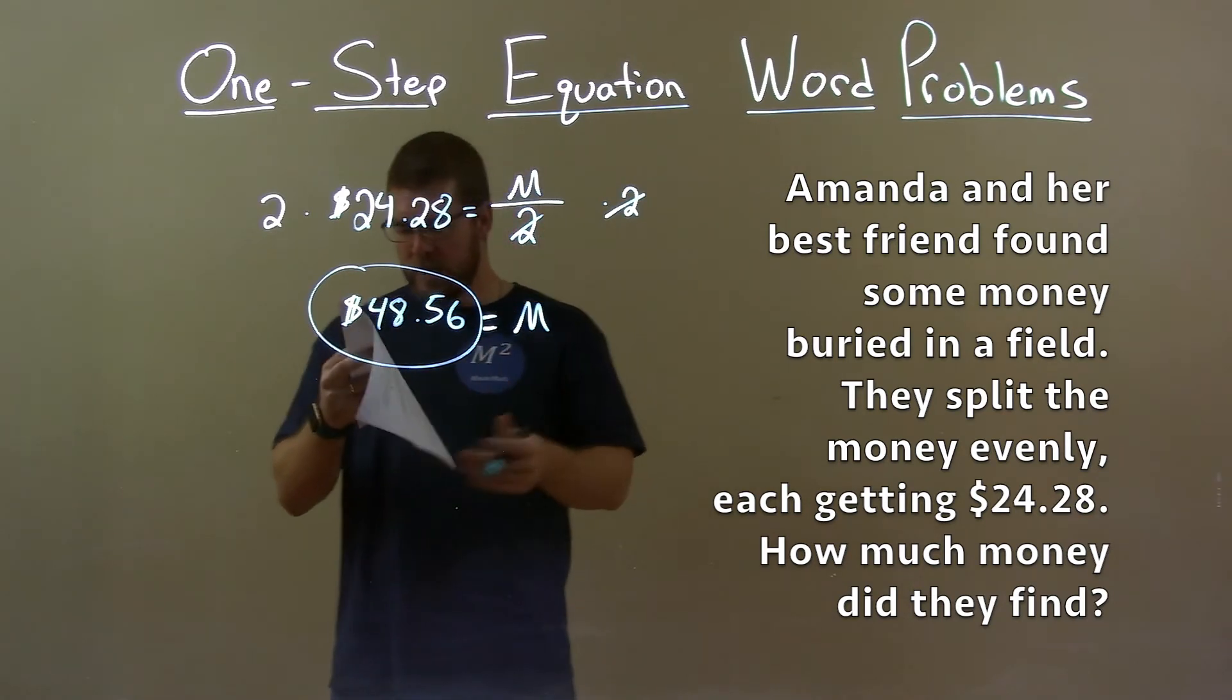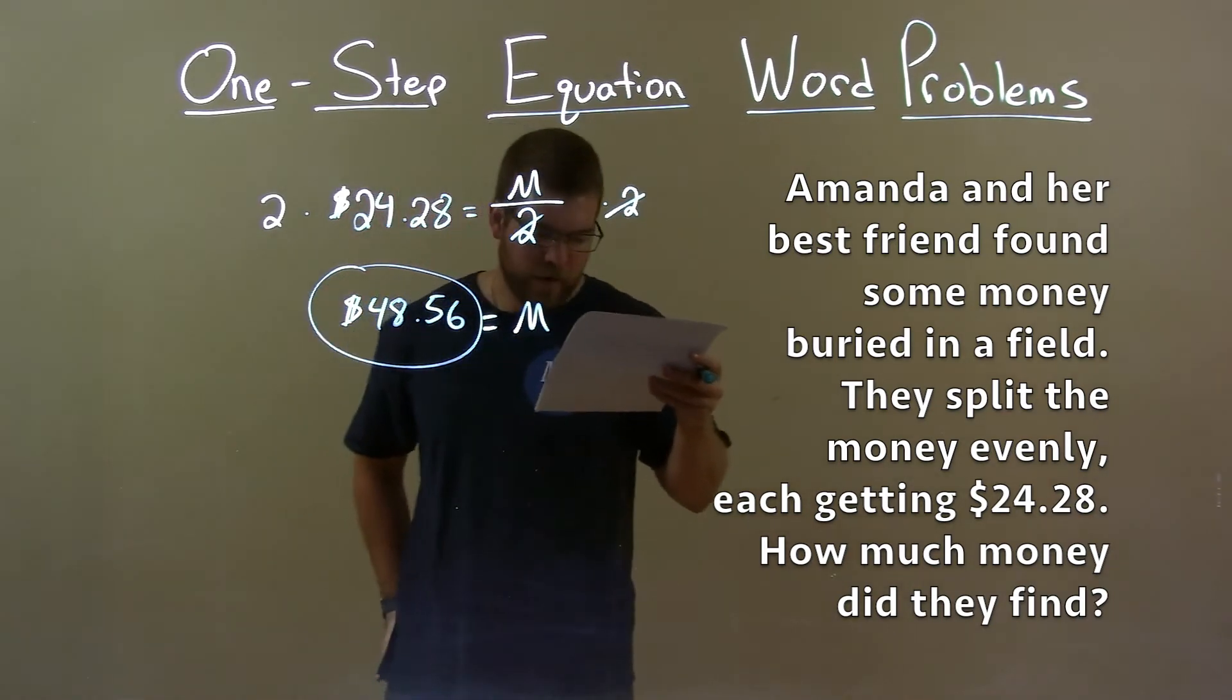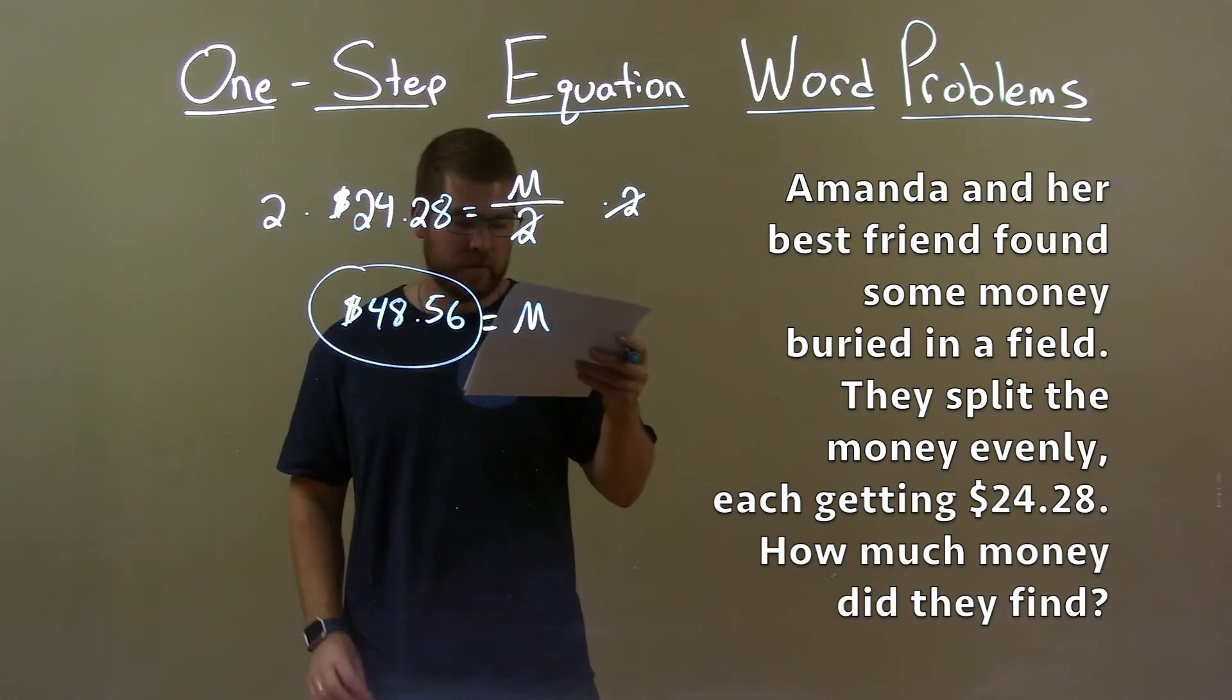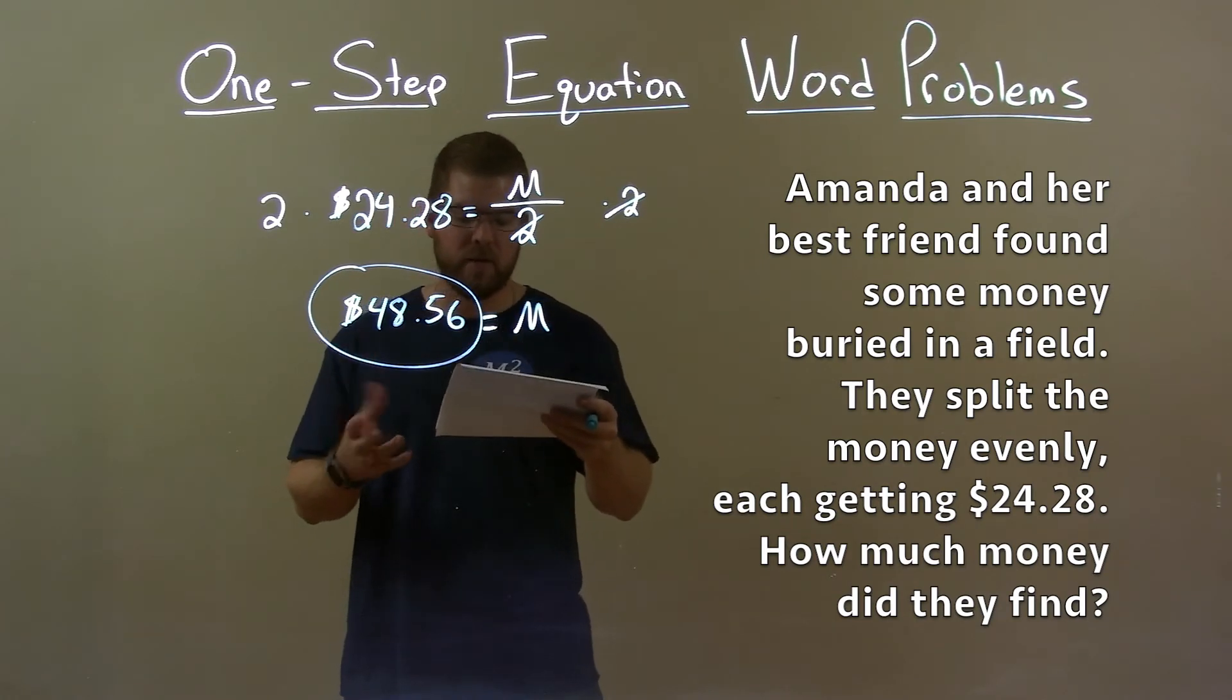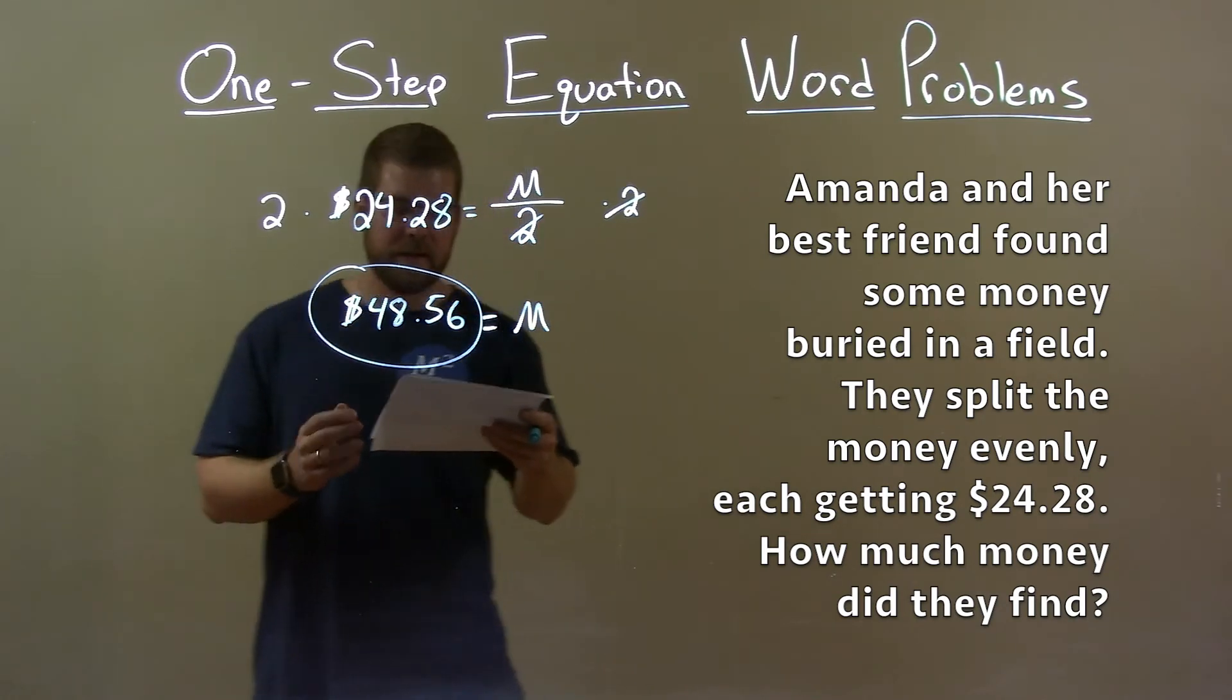Quick recap. We're given the problem: Amanda and her best friend found some money buried in a field. They split the money evenly, each getting $24.28. How much money did they find?